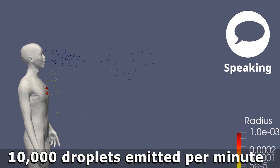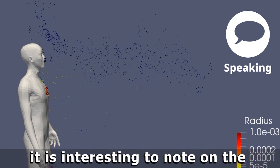So speaking, about 10,000 droplets are emitted per minute, which is interesting to note. On the other hand,